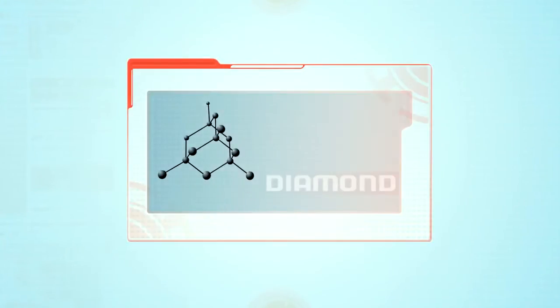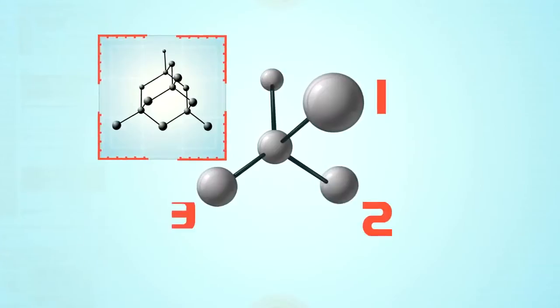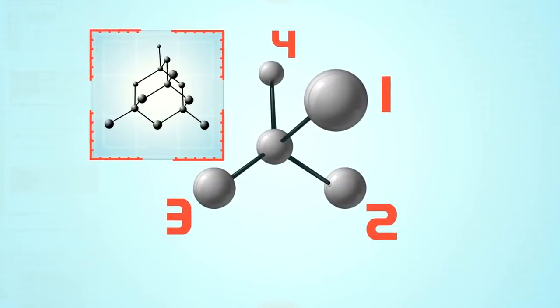In diamond, each carbon atom is connected to four other carbons. This is a very strong arrangement that makes diamonds one of the hardest known materials.